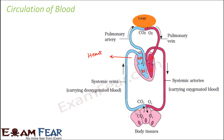All the deoxygenated blood — that means all these cells undergo the process of respiration and give their carbon dioxide into the blood. So the blood carrying all the carbon dioxide from the various body tissues becomes deoxygenated blood, and this deoxygenated blood enters the right auricle of the heart. From the right auricle, it can enter the right ventricle only when the valve is open.